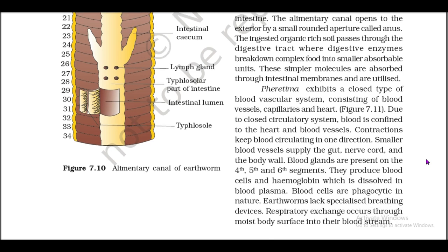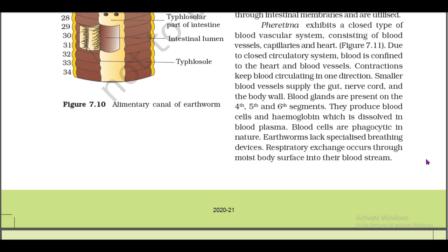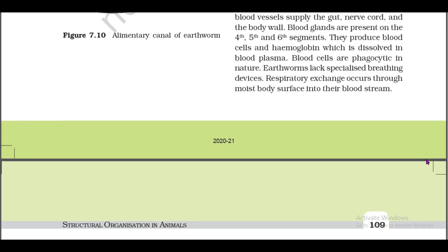Simpler molecules are absorbed through intestinal membranes and utilized. Pheretima exhibits a closed type of blood vascular system consisting of blood vessels, capillaries, and heart (figure 7.11). Due to the closed circulatory system, blood is confined to the heart and blood vessels. Contractions keep blood circulating in one direction. Smaller blood vessels supply the gut, nerve cord, and body wall. Blood glands are present on the fourth, fifth, and sixth segments; they produce blood cells and haemoglobin, which is dissolved in blood plasma. Blood cells are phagocytic in nature. Earthworms lack specialized breathing devices; respiratory exchange occurs through the moist body surface into the bloodstream.